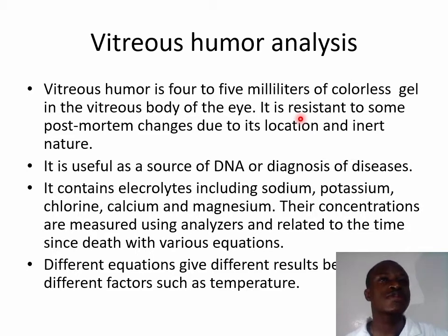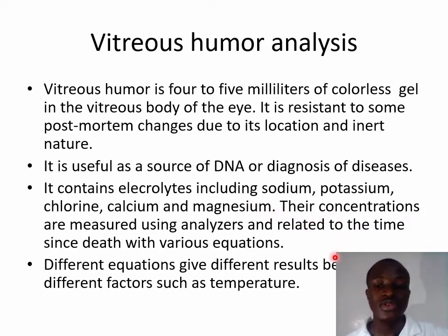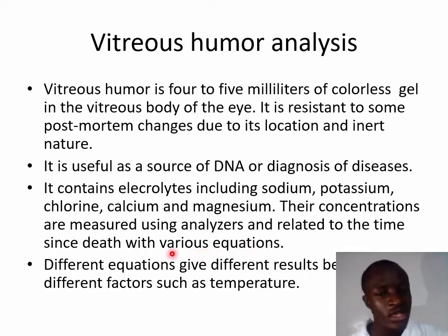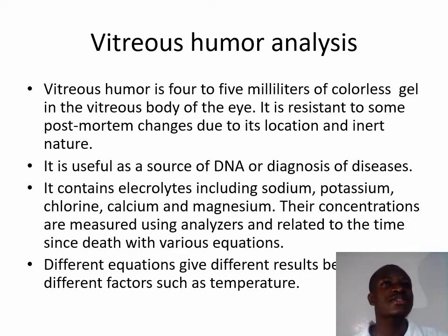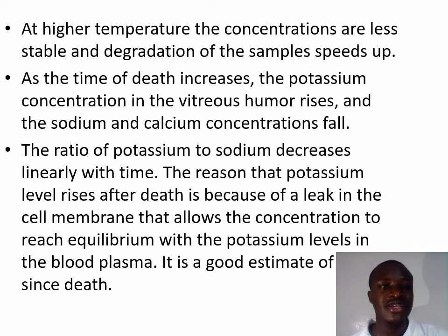We can obtain DNA from the vitreous humor or use it to diagnose the type of disease the individual died of. It contains electrolytes including sodium, potassium, chlorine, calcium, and magnesium, and their concentrations are measured using various analyzers. These concentrations are related to the time since death using various equations. Different results occur due to factors like temperature, humidity, and environmental factors, which generally affect vitreous humor analysis.